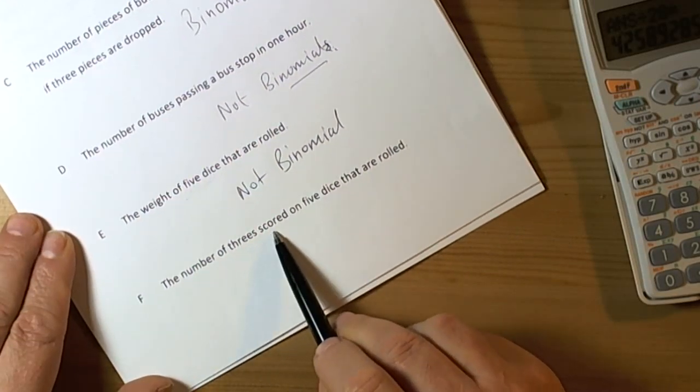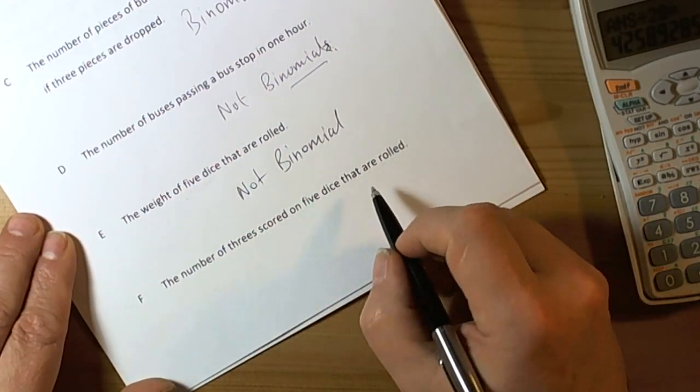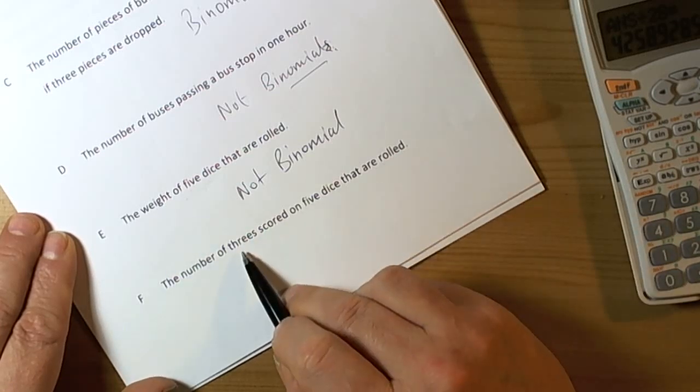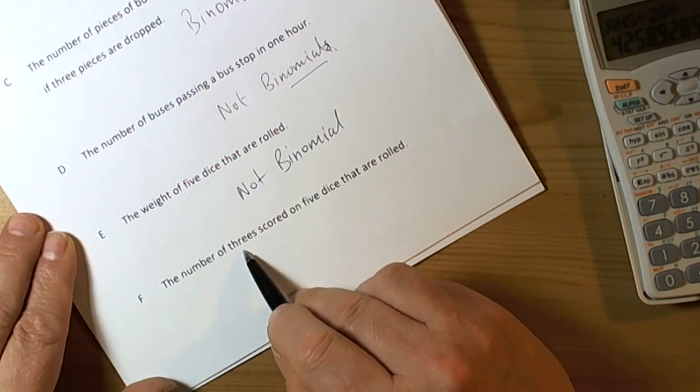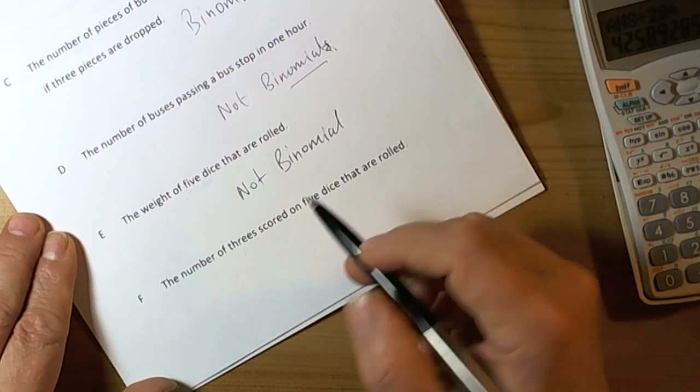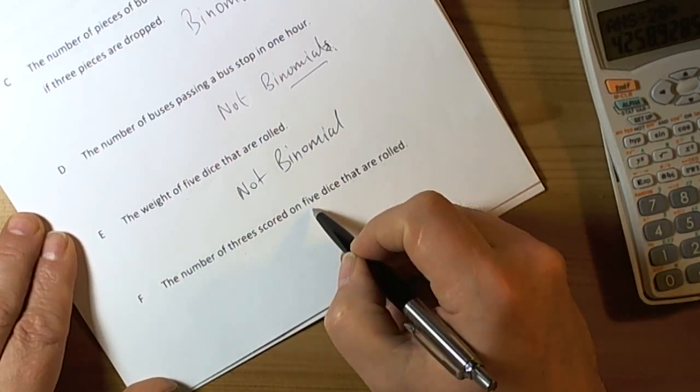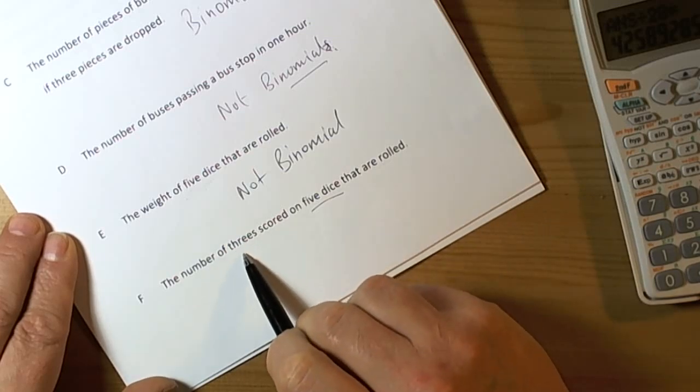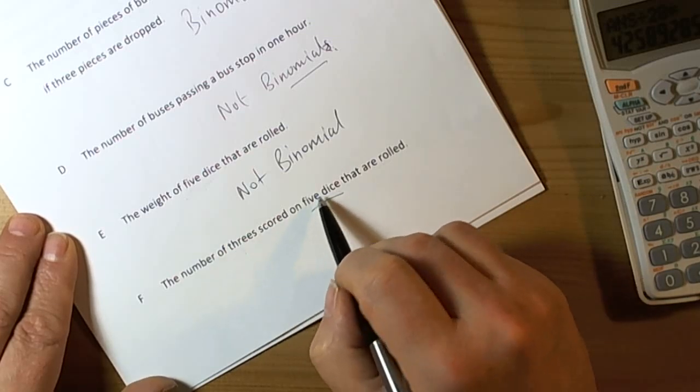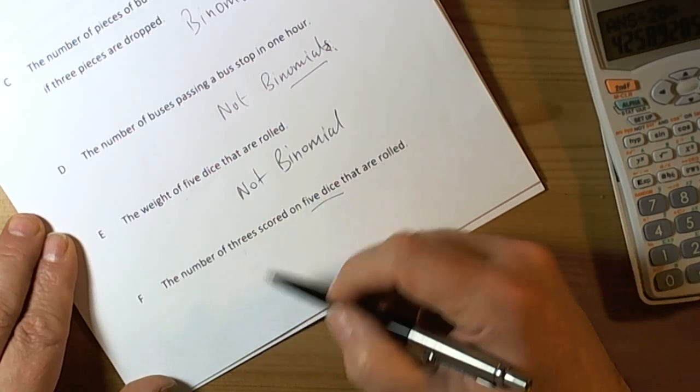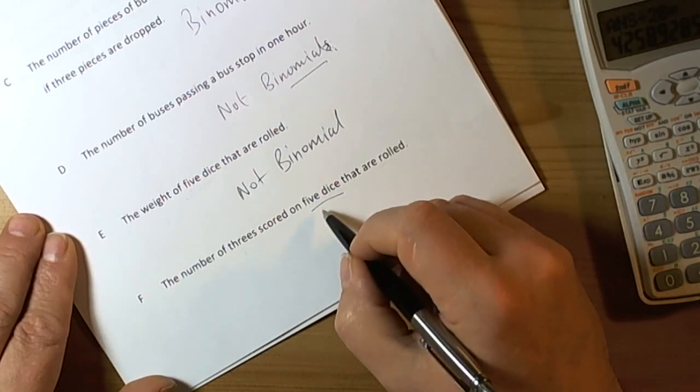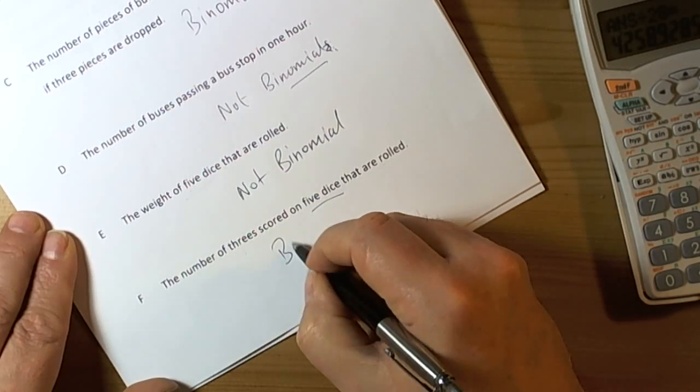F, the number of threes scored on five dice that are rolled. The number of threes or not. So it's got the two criteria: either the probability of three (success) or not three (fail). We've got that condition met. Is there a fixed number of trials? Yep, five dice. Will the probabilities change as each dice is rolled? No, because we're assuming each dice is fair and once you roll one dice it won't affect the probabilities of the next dice. So they are independent. This one will be binomial.